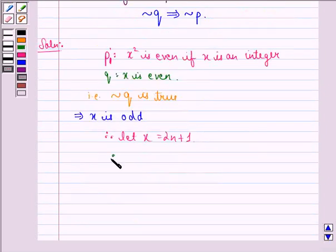Therefore, x square will be equal to 2n plus 1 whole square, taking square on both sides. This equals 4n square plus 4n plus 1, which is also odd due to presence of this extra 1.